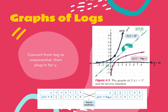If you look at the logarithmic graph, it is the exact opposite. The two ordered pairs I plotted for the exponential were (0, 1) and (1, 2). On my logarithmic graph — log base 2 of x — you flip them. So it's going to be (1, 0) and (2, 1). And my asymptote is now going to be the y-axis instead of the x-axis, and the graph approaches that asymptote.